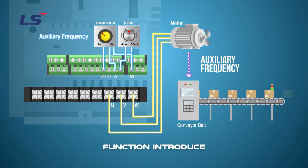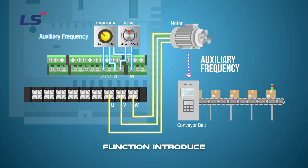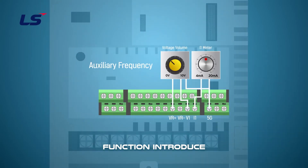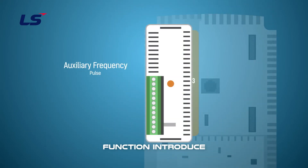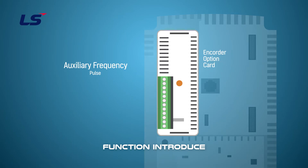It is mainly used when precise speed adjustment is required in conveyor belts that require vision inspection. There are two methods of auxiliary speed input: analog signal and pulse signal. The analog signal can be adjusted with two signals of external resistance and current. In order to control the auxiliary speed by pulse signal, it is only possible with an inverter encoder option card. The auxiliary speed can be adjusted by the pulse signal value entered into the option card.